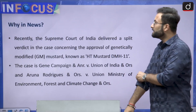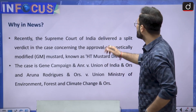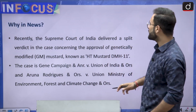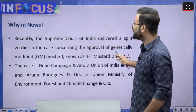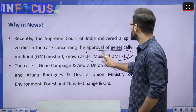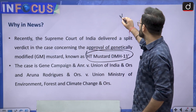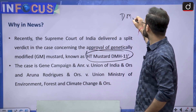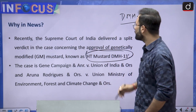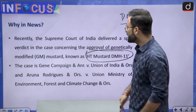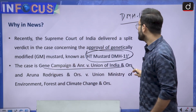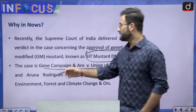Recently, the Supreme Court of India delivered a split verdict in a case concerning the approval of genetically modified mustard known as HT Mustard DMH-11. DMH-11 is the name of the crop variety. The name of the case is Gene Campaign and Union of India, though you do not have to remember this particular case name.